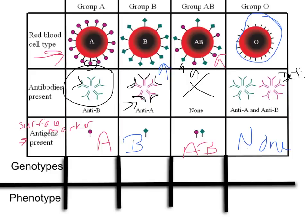Let's look at the possible genotypes for someone with type A blood. If somebody has type A blood, they have to have at least one of the dominant I^A alleles. So they could be I^A little i — dominant recessive — or they could be homozygous I^A, I^A. They cannot have the B allele anywhere in their genotype, because that trait will be expressed since they're codominant.